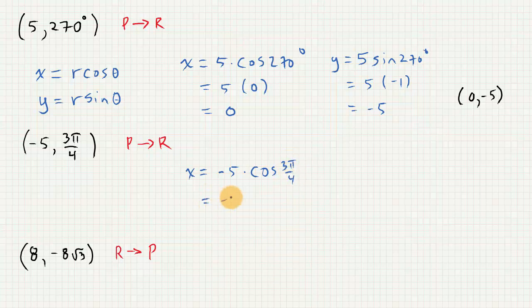So that will be negative 5 times the cosine of 3 pi over 4 is negative root 2 over 2. And that is going to be 5 square root of 2 over 2.